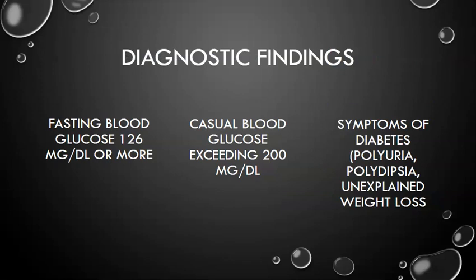The way that we diagnose diabetes, either type 1 or type 2, is we look at their fasting blood glucose. If it is 126 or more, then we would think that they are likely developing a diabetic condition. Casual blood glucose exceeding 200 — fasting means at least eight hours of not eating or drinking, while casual blood glucose is checked at any point during the day.